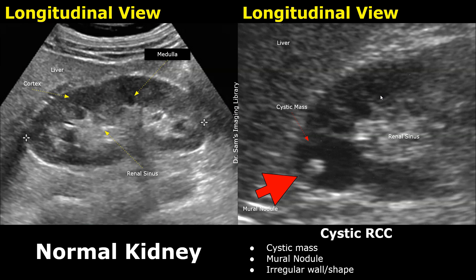RCC also has a cystic type. It can appear as an anechoic cystic mass with internal structures such as internal echoes and mural nodules. A mural nodule is a small solid mass that grows within the wall of the cystic structure. A nodule or an irregular wall shape can be a sign of a malignant mass.